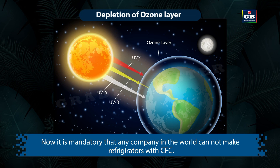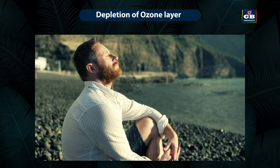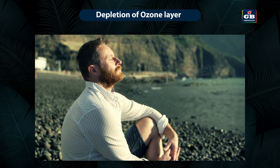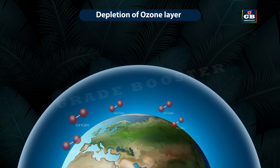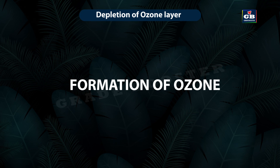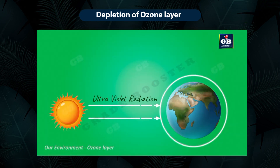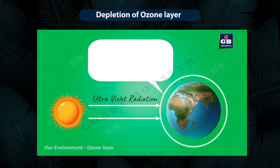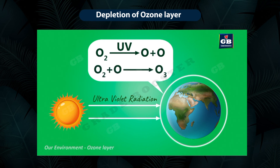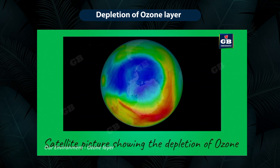Whereas ozone is a deadly poisonous gas, but it protects us from the harmful UV radiation of the sun. Overexposure to UV radiation can cause skin cancer in humans. Oxygen is present in the atmosphere, but ozone is found at the higher levels of the atmosphere — that is, 15 to 40 kilometers above the surface of the Earth. When UV radiation from sunlight heats the oxygen in the atmosphere, the oxygen molecules split into oxygen atoms. These free oxygen atoms then combine with oxygen molecules and form ozone molecules. This is how ozone is formed.